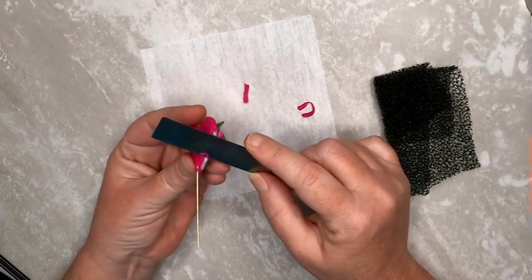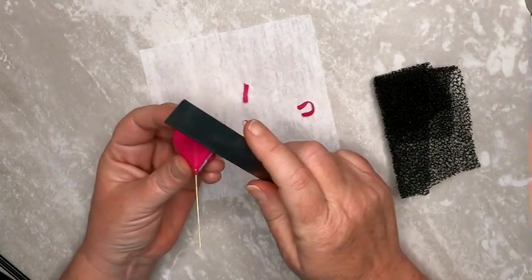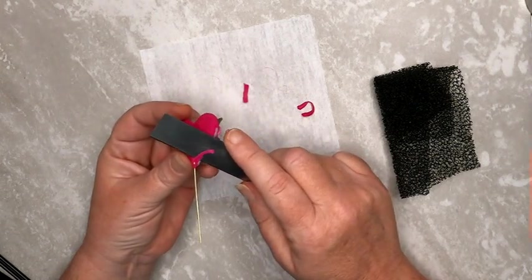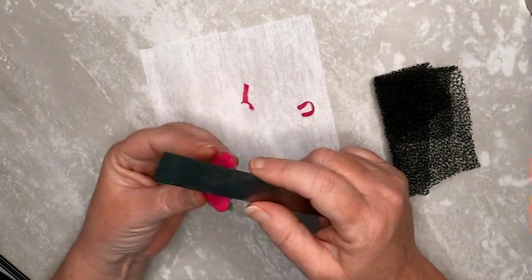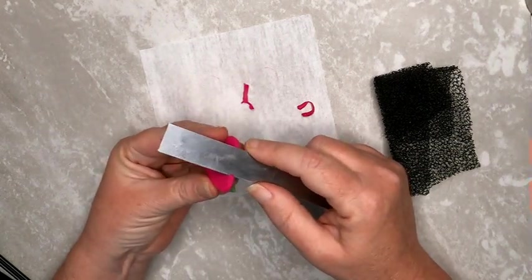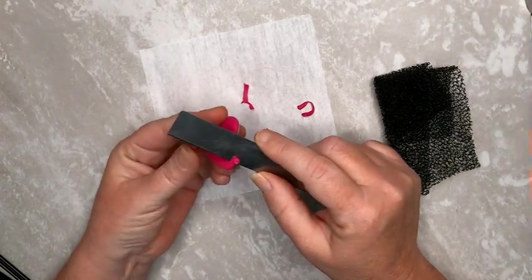Carefully use your blade to trim any excess clay from the sides of your heart. Then cure the heart, tented, face-up, at the manufacturer's recommended temperature for at least 30 minutes.